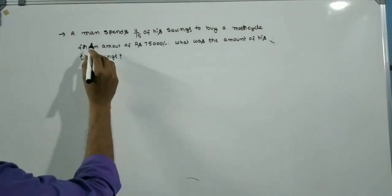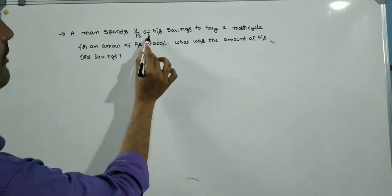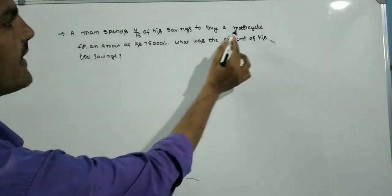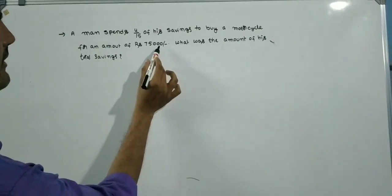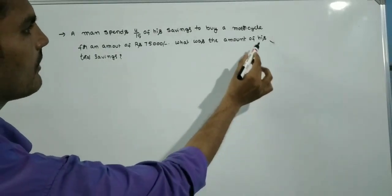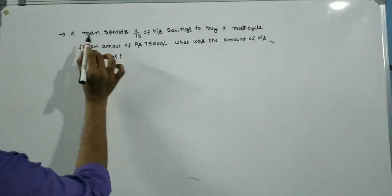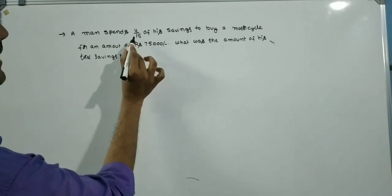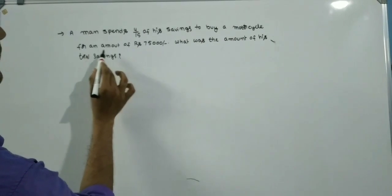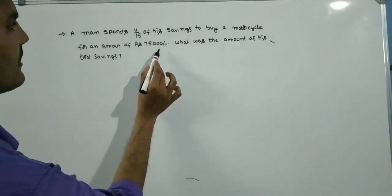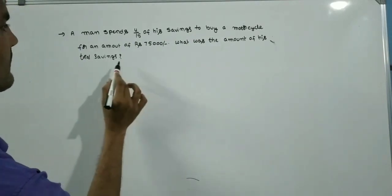Next problem: A man spends 4/15 of his savings to buy a motorcycle for an amount of Rs. 75,000. What was the amount of his total savings?